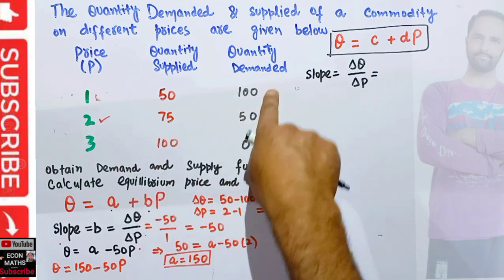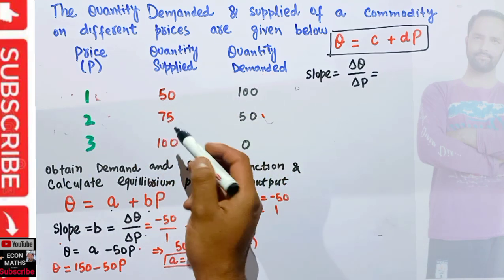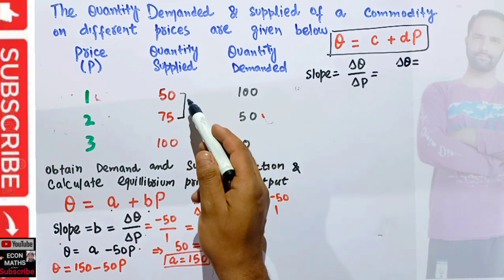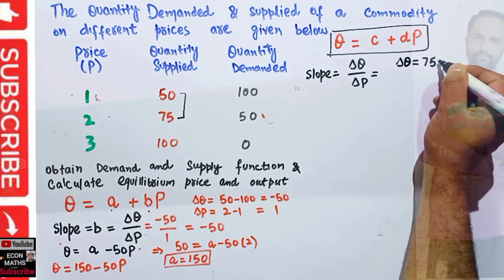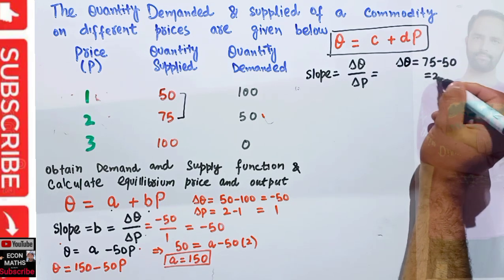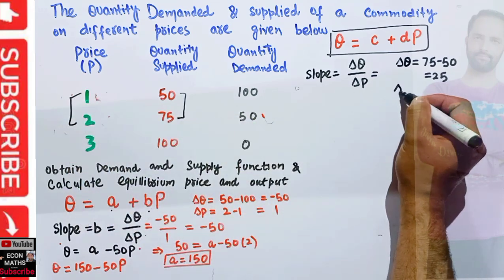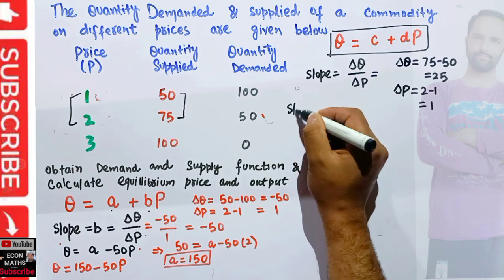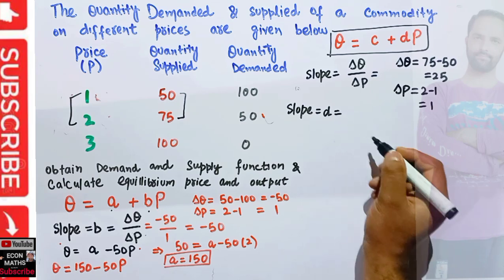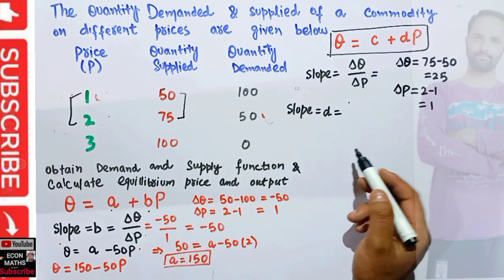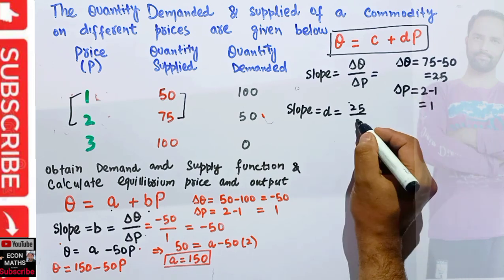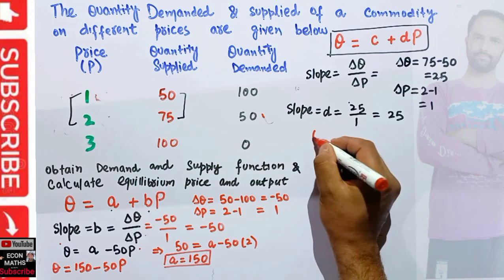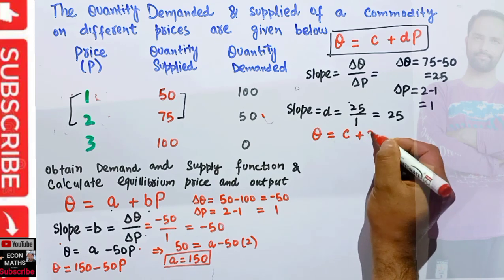Let us take the first two rows to get the change in quantity. Change in quantity is 75 minus 50, which comes out to be 25. Corresponding to this, change in price is 2 minus 1, which comes out to be 1. So slope D equals delta Q upon delta P, which is 25 upon 1 — a positive slope of 25. So our supply function becomes Q equal to C plus 25P.